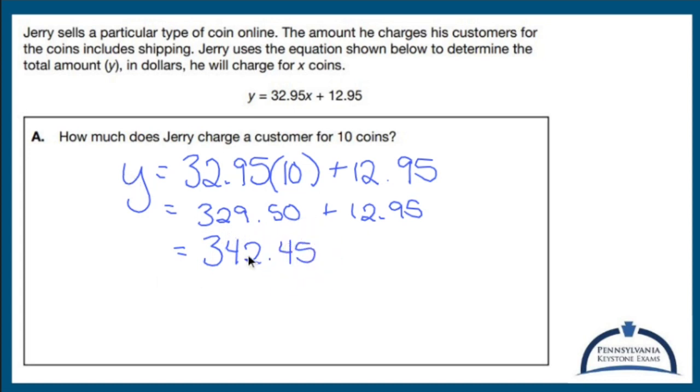So Y equals 342.45. How much does Jerry charge a customer for 10 coins? Jerry, this is me using sentences, charges $342.45 for 10 coins. Wow.